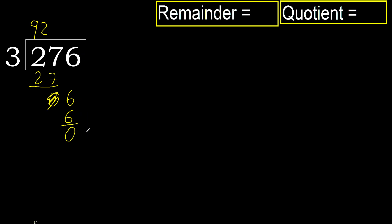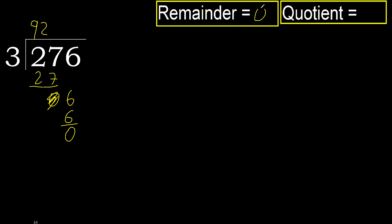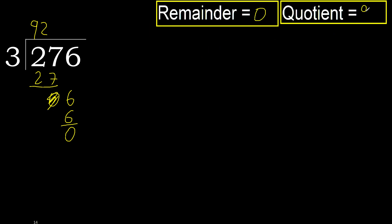There is no next number, therefore finish. 276 divided by 3 is 92.